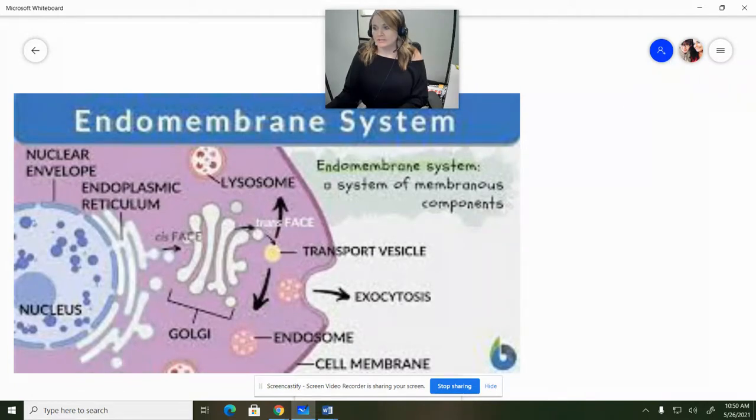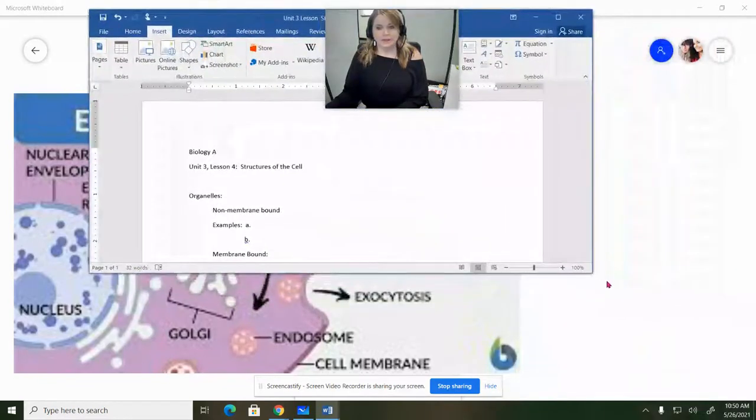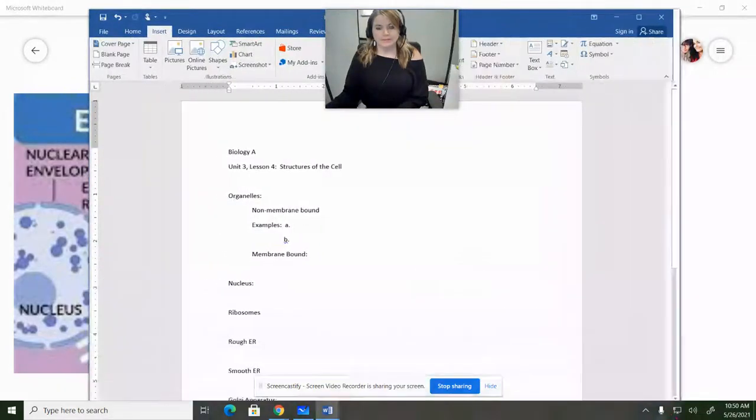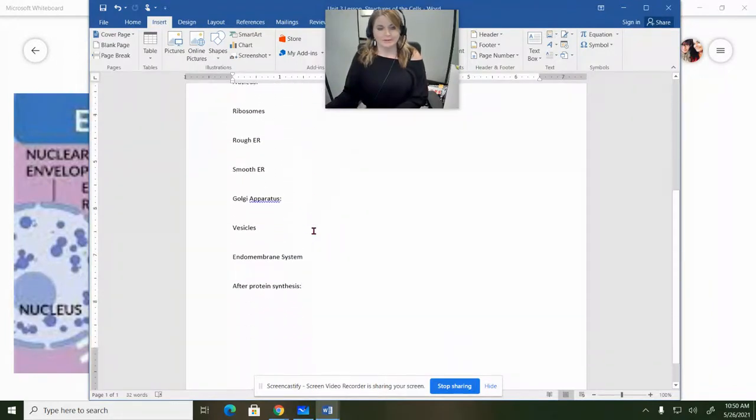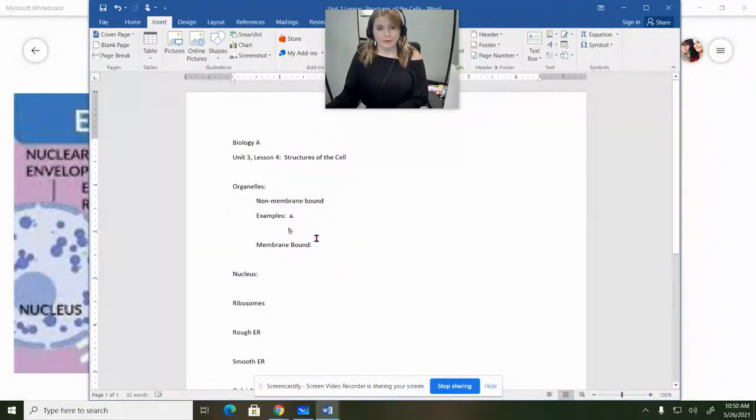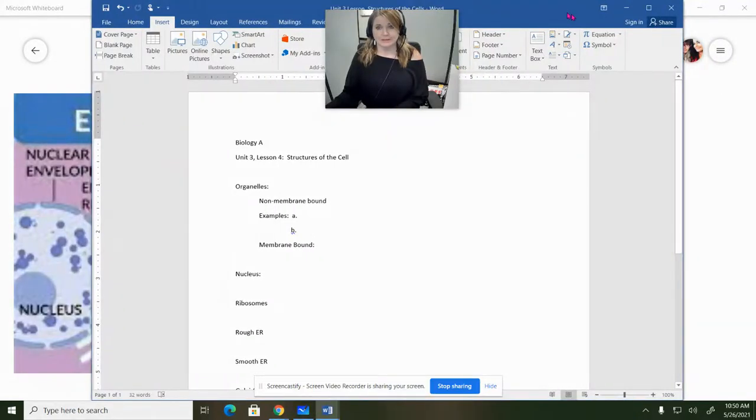We're going to be looking at just some of the structures of the cell today, specifically those that are found in the endomembrane system, which is what we have up on the screen. Just as a reminder to you that on my website, there is a follow-along guide here to go through kind of an outline of what we're going to be talking about in our lesson today. This is a pretty short one. A lot of it is actually review from some previous lessons that we did, so that's kind of nice as well.